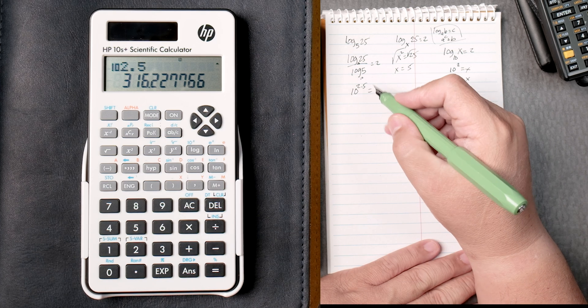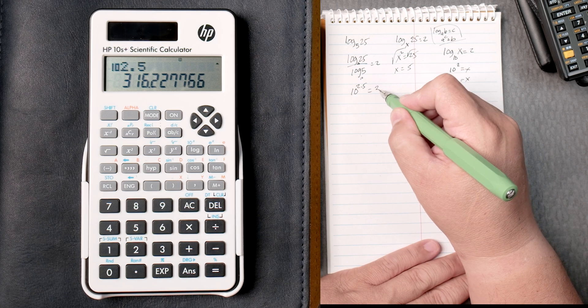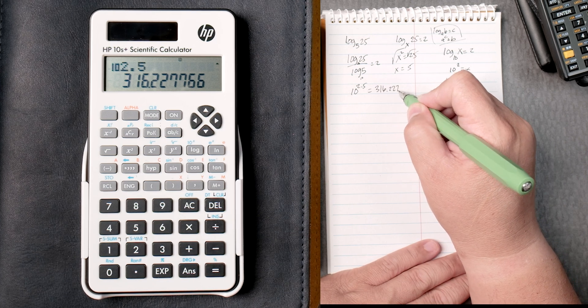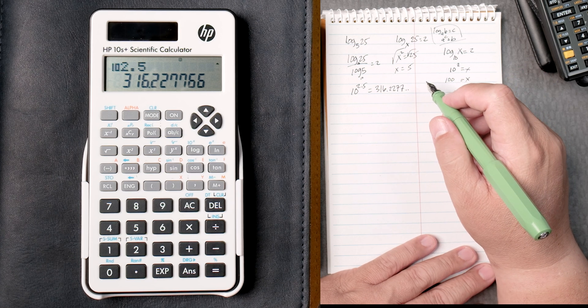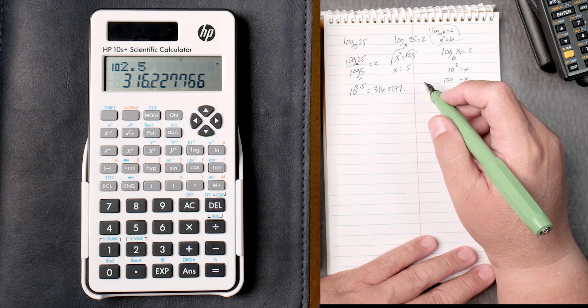Equals. That's right. The notation didn't look right on the calculator, did it? But that is the right answer. Keeps going. 316.227 and there's another 7 there.